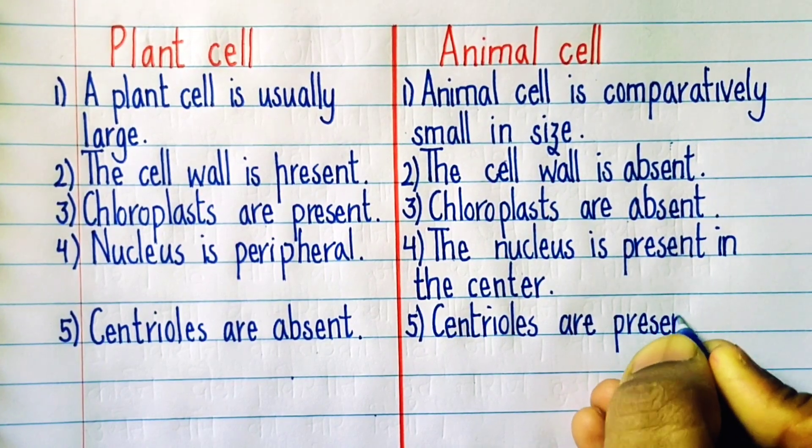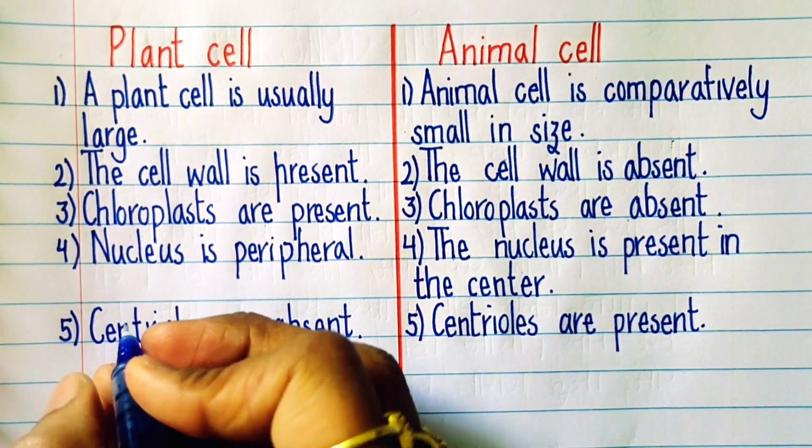Fifth point: Centrioles are absent in plant cells, whereas in animal cells, centrioles are present.